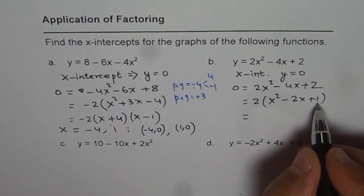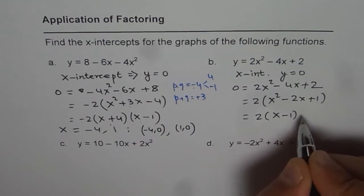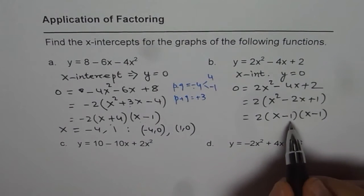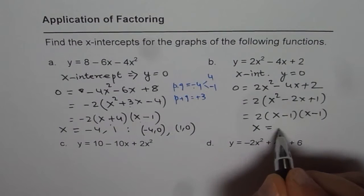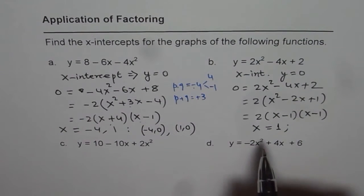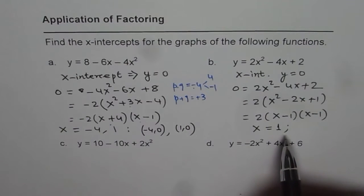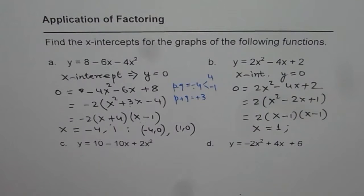We need a sum of minus 2 and product of 1. So the two numbers should be negative 1. So we get 2 times x minus 1 times x minus 1, or x minus 1 whole square. So that gives us just one value in this case. So the value is x equals to 1. So the x-intercept is at x equals to 1.